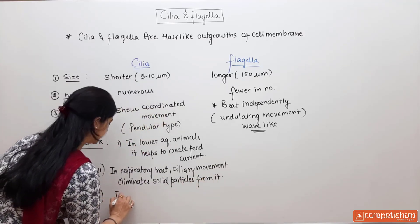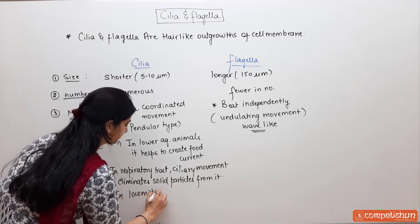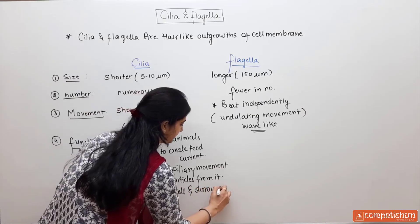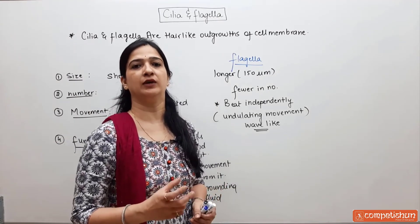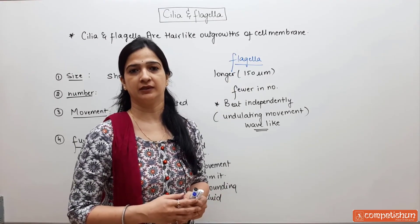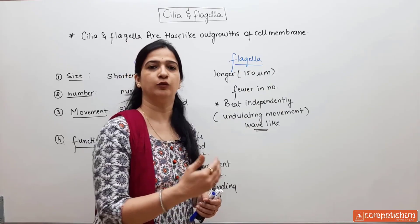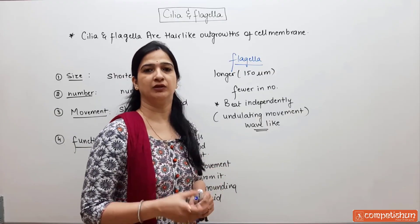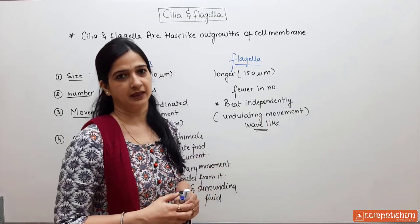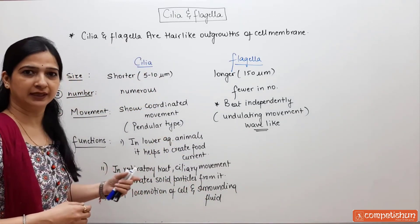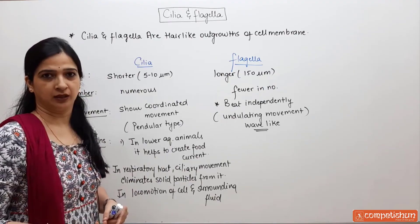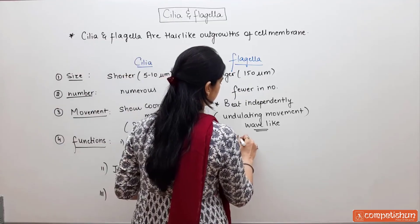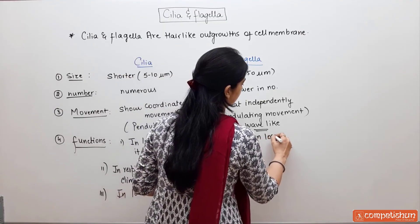Cilia also help in locomotion of the cell and surrounding fluid. So ciliary movement is involved in different types of functions other than locomotion. But flagella are only involved in locomotion.